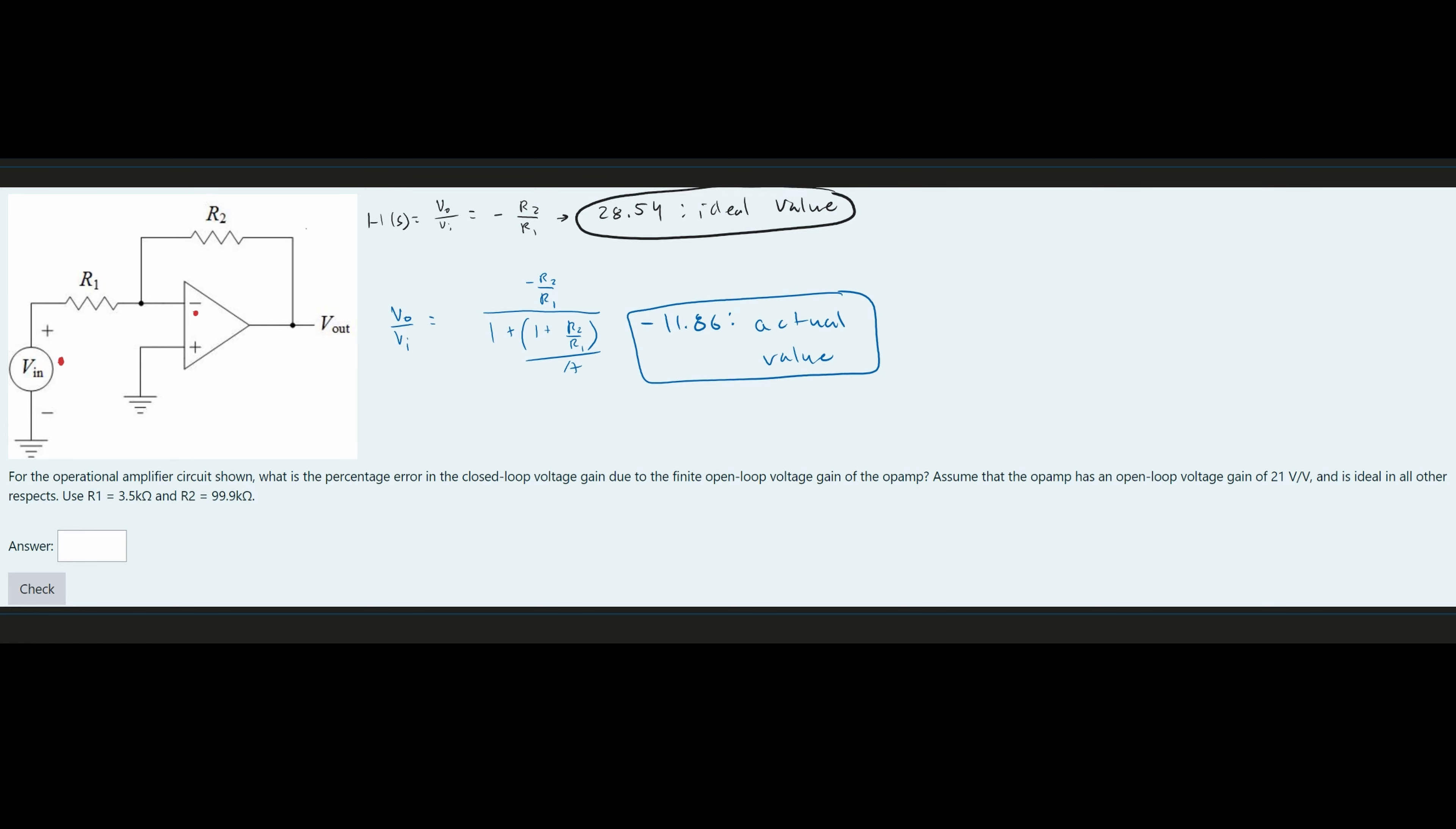Now we need to take the percent error. So this is our next step. If we look at the instruction again, we have our operational amplifier closed loop voltage gain due to the finite open loop voltage gain. The percent error is what we need to find, because that's what it is asking us for. So to find the percent error, what we're going to have is our actual value again.